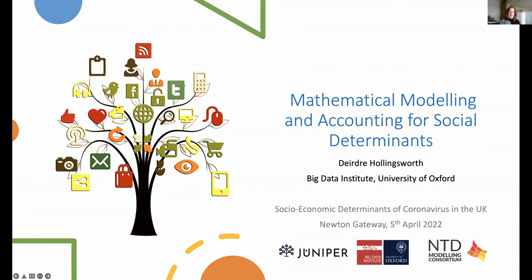I've included this tree at the beginning, which I found online and then couldn't find again in order to put the source at the bottom — my apologies — but I think it's a useful visualisation of all the different ways in which we try to measure social networks, social interactions, but also social determinants of our behaviour, our risk, our interactions. It is a complex picture and I'm just going to share some thoughts about a couple of aspects of it for COVID-19.